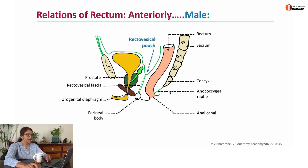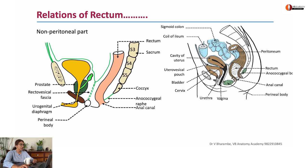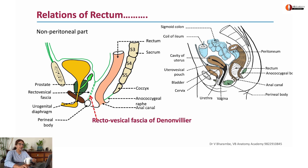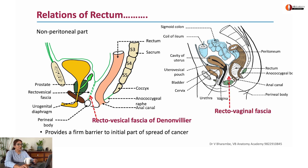In the male, the peritoneum helps to create a rectovesical pouch. In the female it creates the rectouterine pouch of Douglas. In the male, the non-peritoneal part below the peritoneum shows the presence of a thickened fascia called the rectovesical fascia of Denonvilliers. This is a firm fascia that tries to prevent the easy spread of cancer through it. In the female, a similar fascia called the rectovaginal fascia exists.